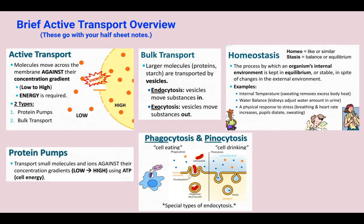Bulk transport is the second type of active transport. This is when we are moving a lot of materials, or very large materials — larger molecules, proteins, and starches — transported by something called a vesicle. There are two main ways we do this: endocytosis, which is moving vesicles in, when our cells are bringing something into the cell; and exocytosis, when the vesicles are moving things out of the cell membrane.